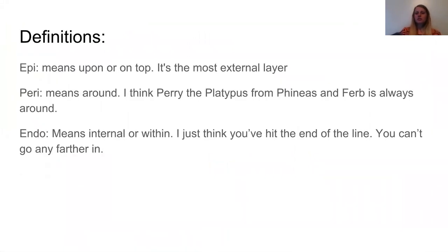I like to start by the definitions because it helps me keep them in order when I'm labeling them. So epi means upon or on top. It's the most external layer, the closest to the surface.